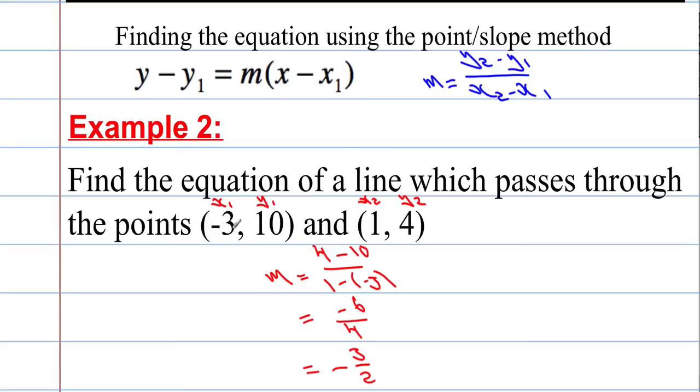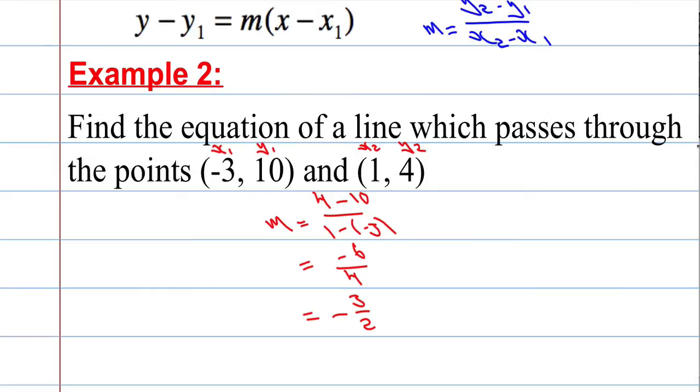Go back to the formula here. We've decided that x₁, y₁ is these points here, so I'll substitute them in. We get y subtract, well y₁ is the value 10, must equal m, which is negative 3 over 2, times x subtract x₁, which is the value negative 3. I'm taking away a negative number which is the same as adding 3. Just in case you're a little bit unsure, I'm subtracting and then substituting x₁ which is negative 3, which gives me add 3.